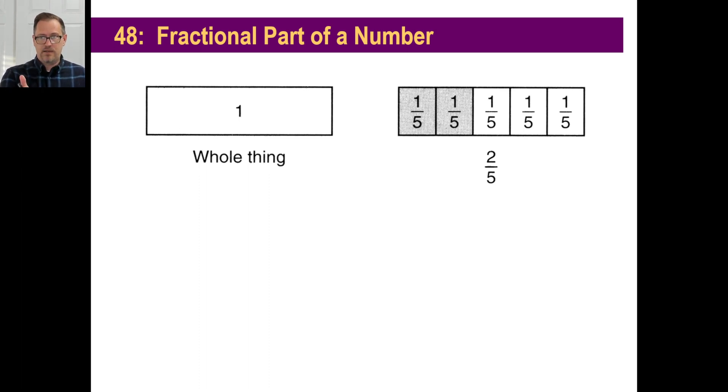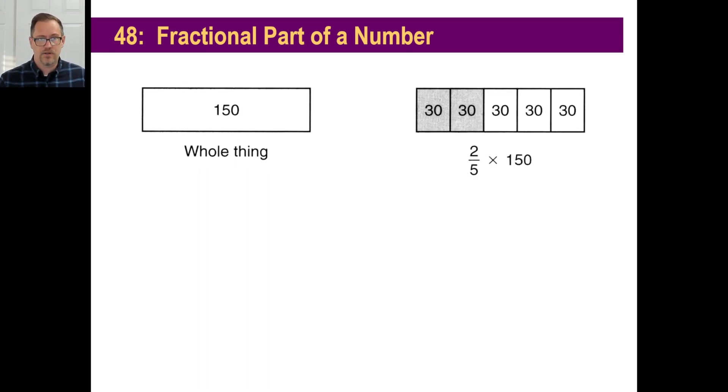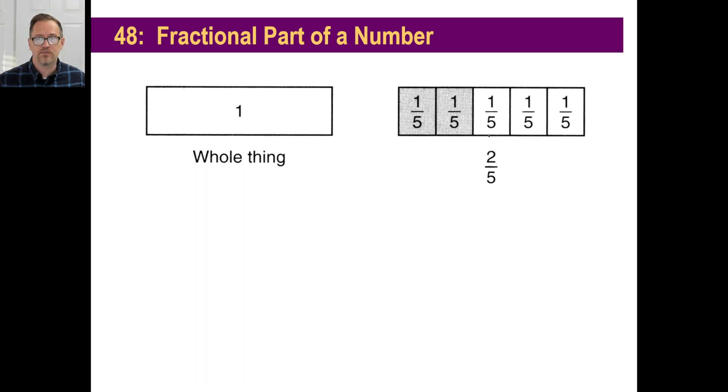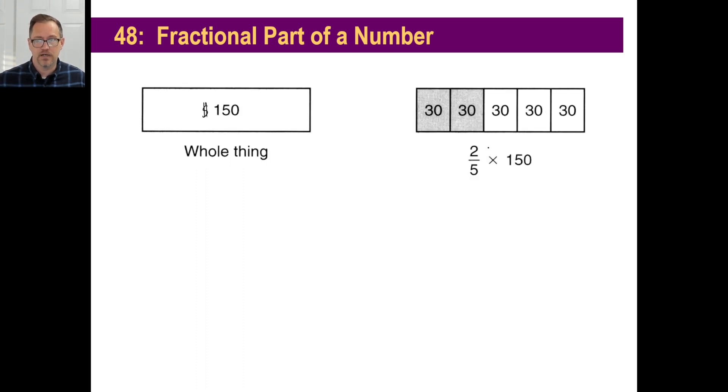You've seen stuff like this before, right? There's the whole thing. There's two-fifths of the whole thing. You divide it into fifths. You can divide it into any number you want and find a fraction of it. There's another one. There's the whole thing. It's $150, let's say. You babysat two bratty kids for an hour, make $150. That's the standard homeschool rate, isn't it? Two-fifths times 150. In other words, whenever you see the word of...